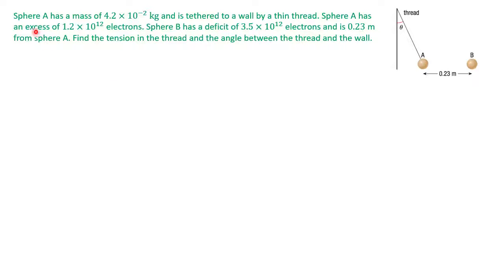In this video, I'm going to take a look at a static equilibrium problem that involves Coulomb's Law. Sphere A has a mass of 4.2 times 10 to the negative 2 kilograms and is tethered to a wall by a thin thread. Sphere A has an excess of 1.2 times 10 to the 12 electrons. Sphere B has a deficit of 3.5 times 10 to the 12 electrons and is 0.23 meters from sphere A. Find the tension in the thread and the angle between the thread and the wall.